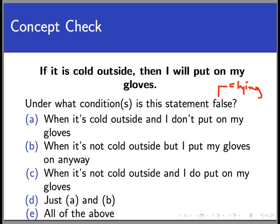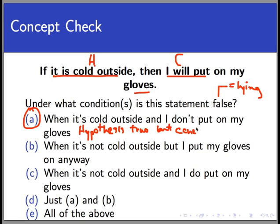So as we've seen in the previous example, the only situation in which a conditional statement is false is when the hypothesis is met or is true, but the conclusion is false, meaning that it doesn't follow. The hypothesis here is it is cold outside, and the conclusion is I will put on my gloves. So the only case here where the promise is false is when it's cold outside but I do not do as I said I would do. That is, I don't put on my gloves, and that's option A. That's the correct answer here. In the other two options, the hypothesis is not met, so I'm not constrained by my statement. I can do whatever I want with my gloves because I didn't say what I would do if it were not cold outside. Maybe I just like wearing gloves and I can wear them whatever the temperature is.